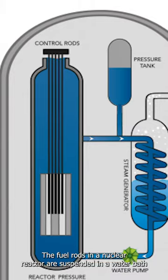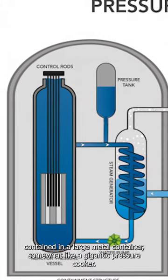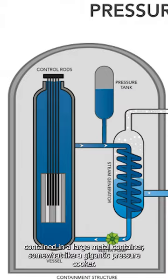The fuel rods in a nuclear reactor are suspended in a water bath contained in a large metal container, somewhat like a gigantic pressure cooker.